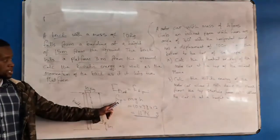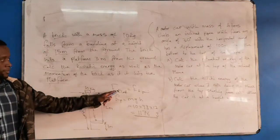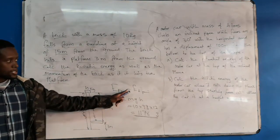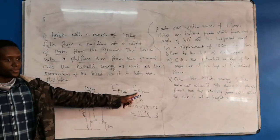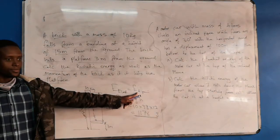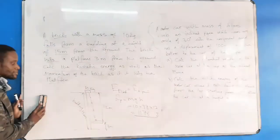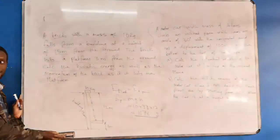But the formula we have used is for potential energy, but we have said the potential energy lost is equal to the kinetic energy. Can I erase this part?